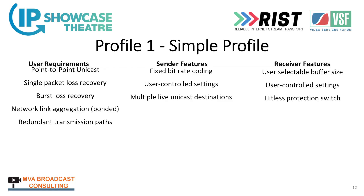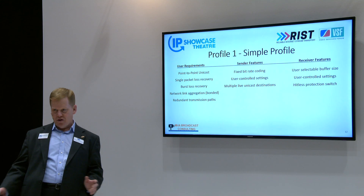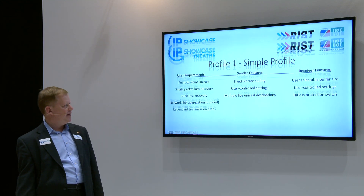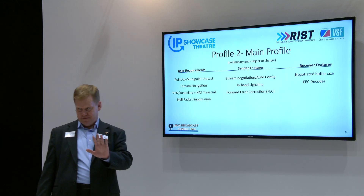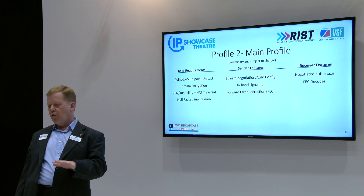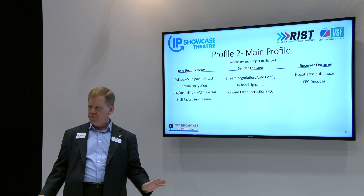Profile one, the simple profile, covers point-to-point unicast, single packet loss recovery, burst loss recovery, network link aggregation (bonded streams), and redundant transmission paths. Sender features include fixed bit rate coding, user control settings, multiple live unicast destinations, user scalable buffer size, and hit list protection switching — so if you have multiple streams going different ways and lose a packet, you have time to resend via an alternate path. Profile one has been approved by the activity group and is going to the Video Services Forum board for approval, hopefully published within a couple of weeks.